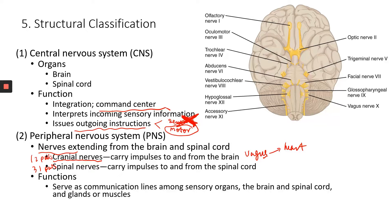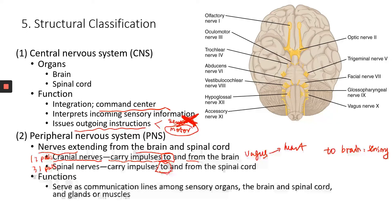If those nerves carry impulses to the brain, that's sensory. If the spinal nerves carry impulses to the spinal cord, that's part of the sensory nervous system. But if the impulses are carried away from the brain or spinal cord, that's going to be motor — that's going to be part of the motor division.